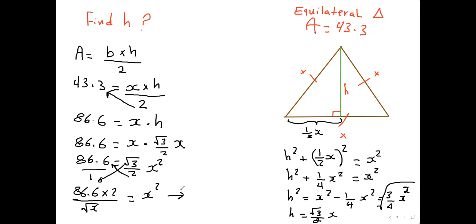If you go to your calculator, go 86.6 times 2 divided by root 3 equals 99.9, so x squared equals 99.9, so that's just 100, and when you square root both sides, you're going to get x equals 10.